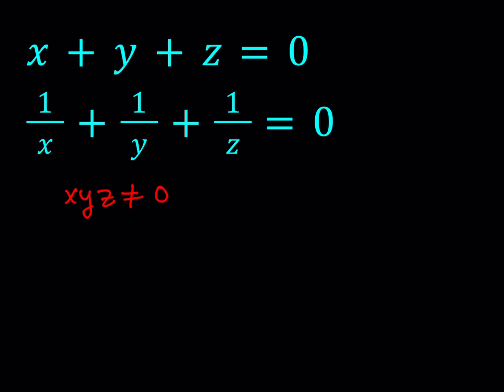Now one thing we can do is make a common denominator in the second equation. Let's go ahead and make a common denominator. You're going to get something that looks like this: xy plus xz plus yz divided by xyz, and that's going to equal 0.